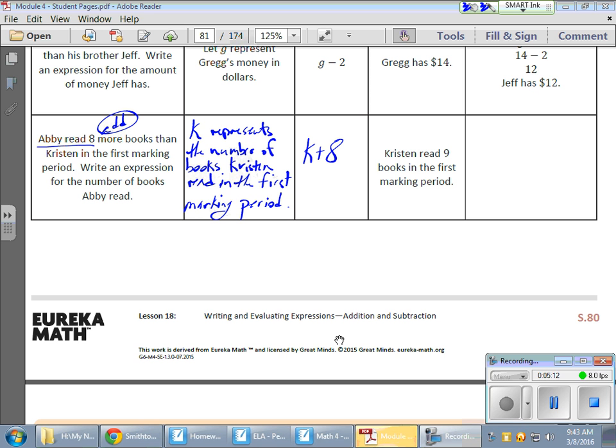Remember, Abby read eight more books. So whatever Kristen read, Abby read eight more. So we have that plus eight going on right there. Now we're saying that Kristen read nine books in the first marking period. That's fine. So our expression is, or our formula is K plus eight. Now we need to fill some things in. If Kristen read nine books, I'm going to replace that K with nine. And I'm still going to add eight. And if I do add eight, I wind up with 17, which means that Abby read 17 books in the first marking period.